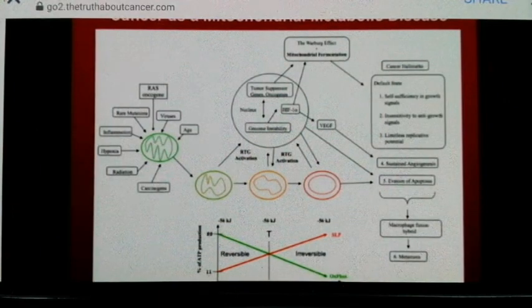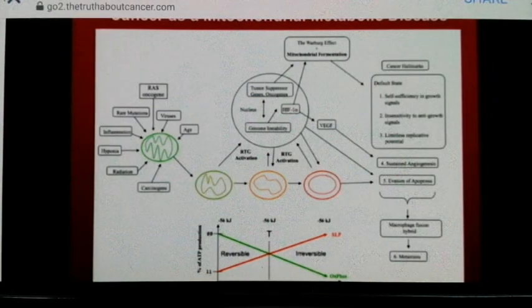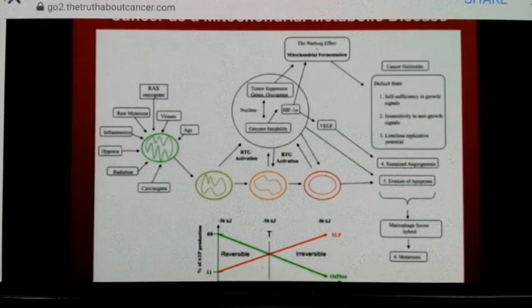Systemic inflammation can cause cancer. These are known carcinogens and known processes. Rare inherited mutations — you hear about genes like BRCA1 — they only cause cancer if they affect the mitochondria, which I'll present in just a second. And we know RAS, and viruses — hepatitis C virus, papillomaviruses, HIV viruses — they all will cause cancer in one form or another.